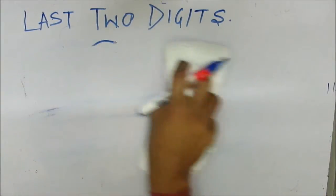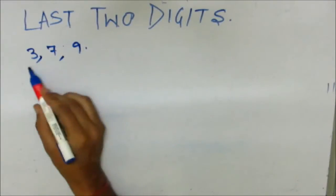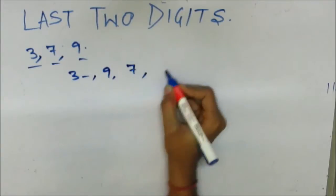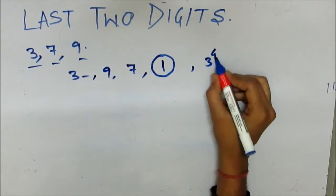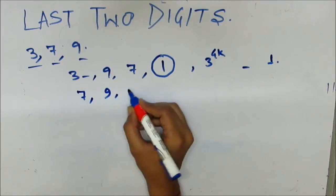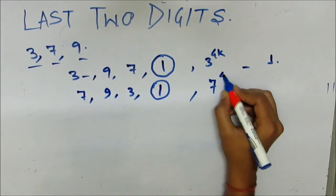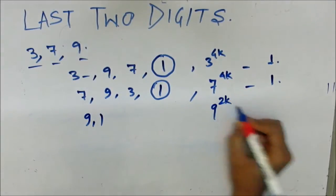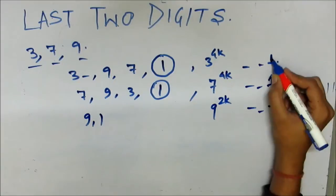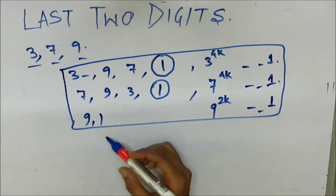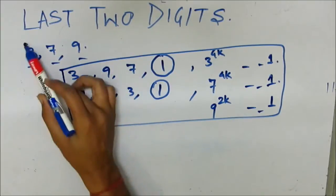Now let's move on to other odd numbers ending with 3, 7, and 9. The power cycle of 3 is: 3, 9, 7, 1 — so 3 to the power 4k ends in 1. The power cycle of 7 is: 7, 9, 3, 1 — so 7 to the power 4k ends in 1. For 9: 9, 1 — so 9 to the power 2k ends in 1. Using this, we can find the last two digits of any number ending with 3, 7, or 9.